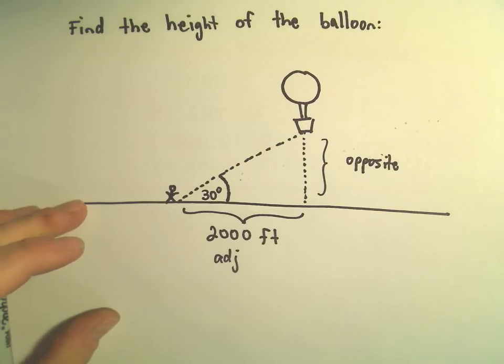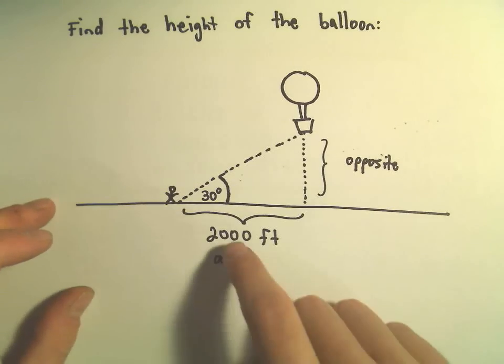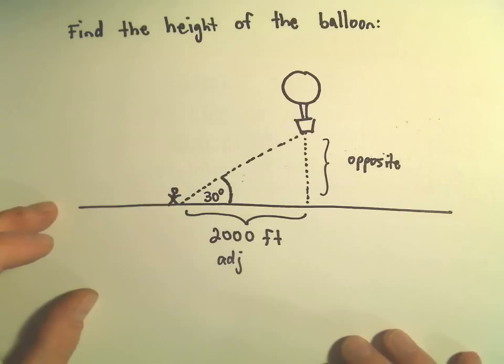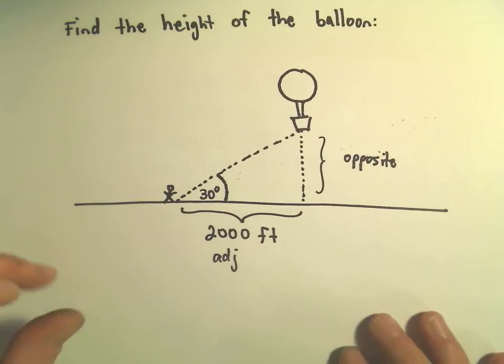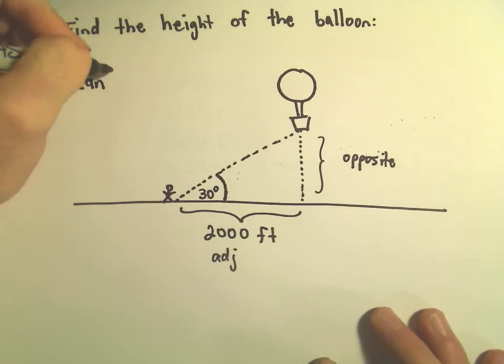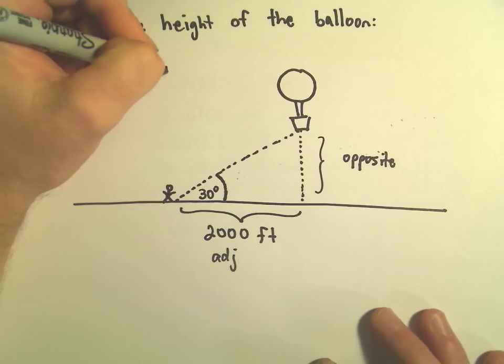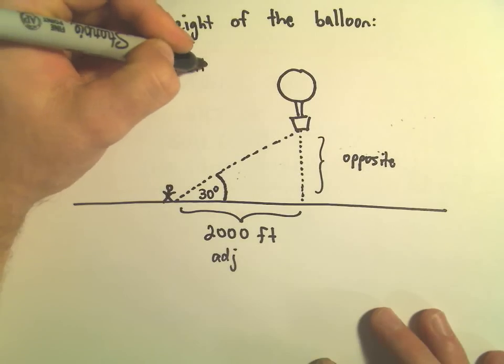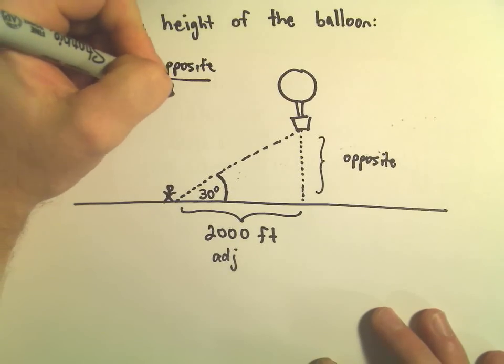Which of the trig functions relates opposite sides and adjacent sides? Well, there's actually two of them, but the one I'm going to use here is tangent. Remember, tangent of an angle is defined to be the ratio of the opposite side to the adjacent side.